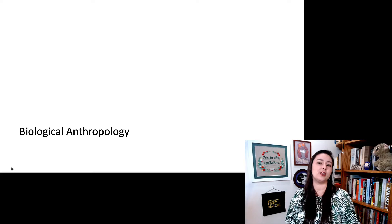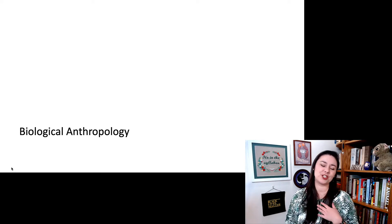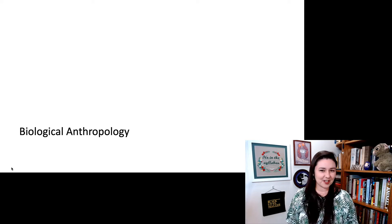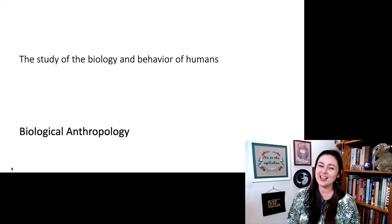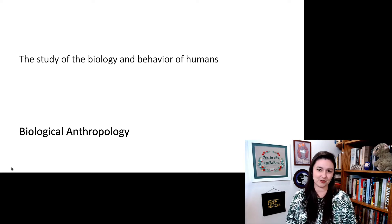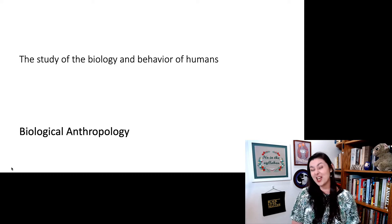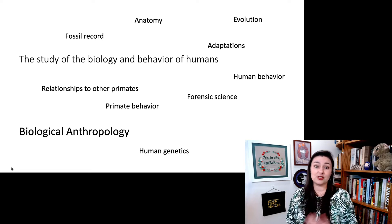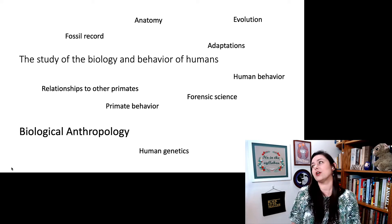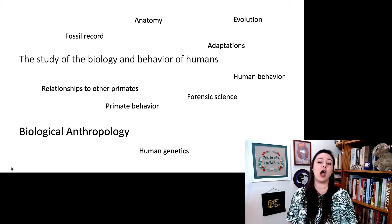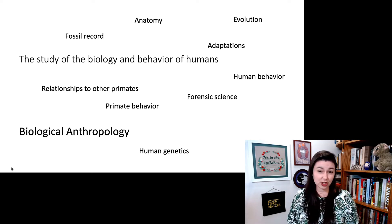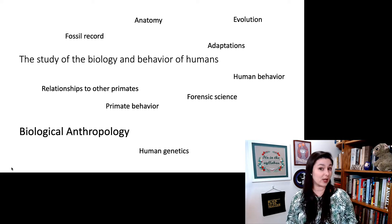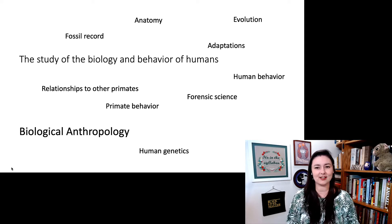First, we have biological anthropology, and this happens to be the subfield with which I am trained. Biological anthropology is the study of the biology and behaviors of humans. But there are so many different ways you can go with this — some people study the fossil record, others study the anatomy of modern humans. We can look at human evolution, the adaptations humans have, our behavior, our relationships to other primates, primate behavior, human genetics, and there's also the interesting field of forensic science, which helps out with a lot of legal cases.